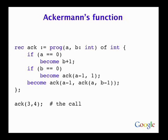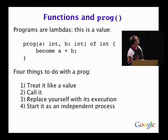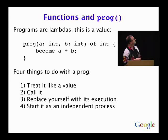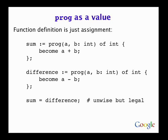These function things are called lambdas, but lambda has too many characters, so we made it 'prog.' Here's a prog value — an integer value function — that returns the sum of A and B, its arguments. That's actually a value in this language; you can pass it around. Once you have one of these values, there are four things you can do with it: treat it like a value and assign it; call it because it's a function; replace yourself with its execution using 'become'; or start a process running it.